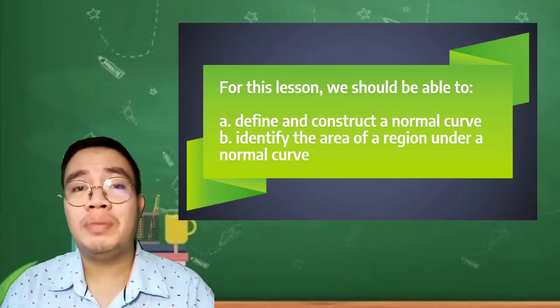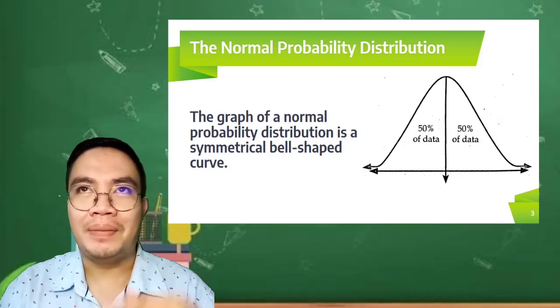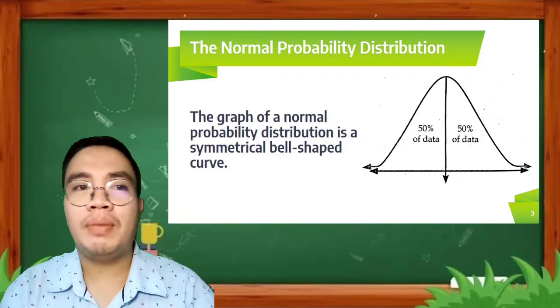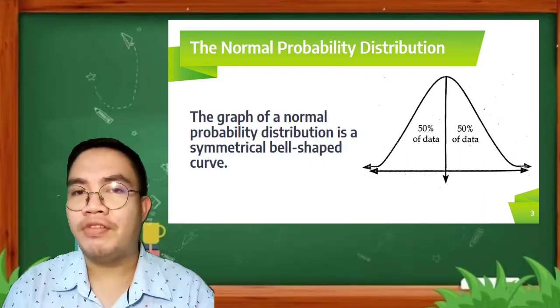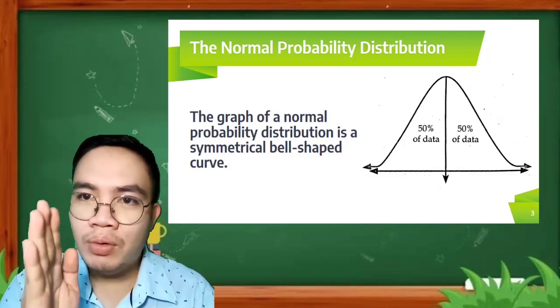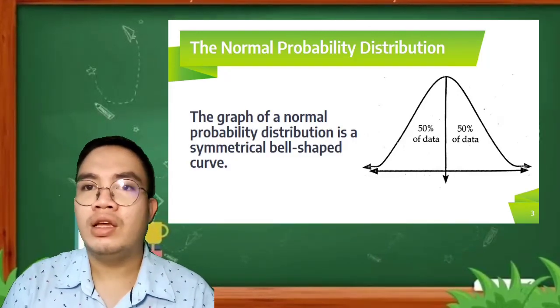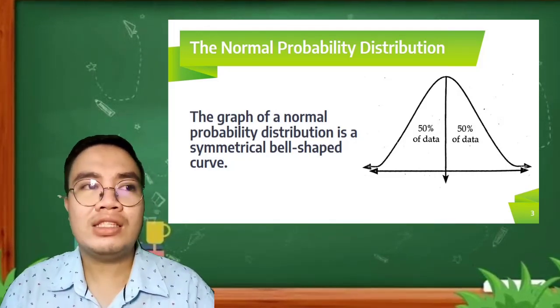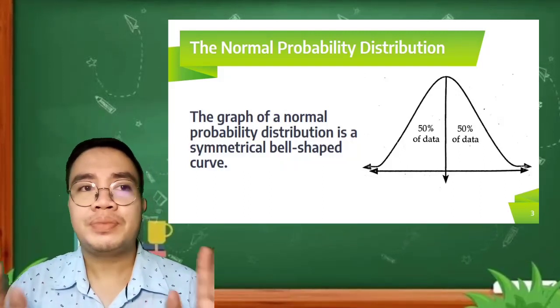Let us recall that the normal probability distribution has a very unique feature because the graph of a normal probability distribution is a symmetrically bell-shaped curve, wherein when you take the half of that curve, you get 50% to the left and 50% to the right.